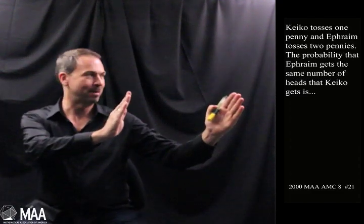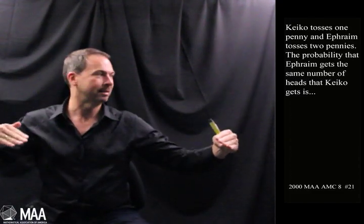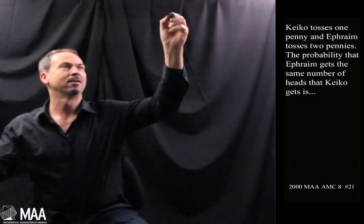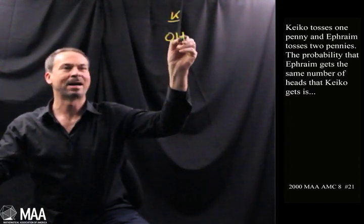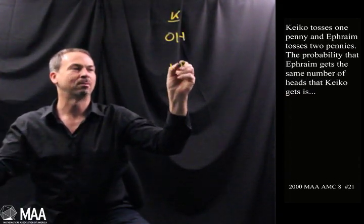All right, so Keiko's tossing one penny, Ephraim's tossing two pennies. We want to know the chance of them getting the same number of heads. Well, I guess I can just sort of list that. Maybe there's options for Keiko. Keiko either gets zero heads with his one penny, or one head with his one penny.